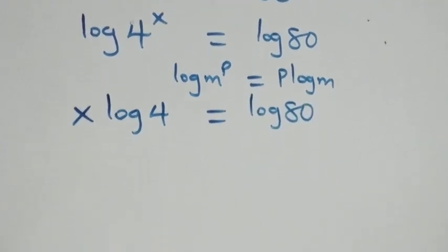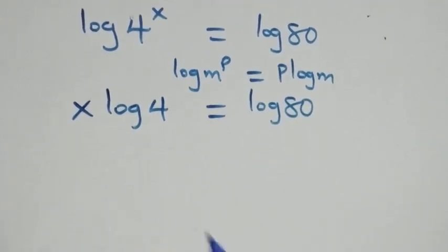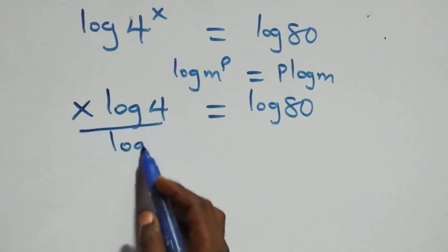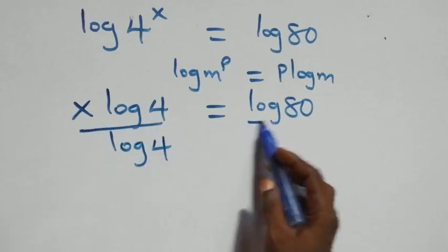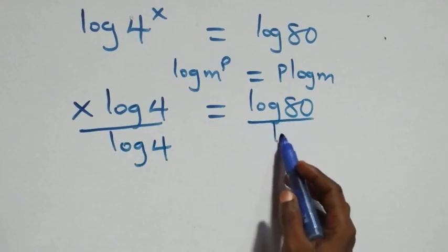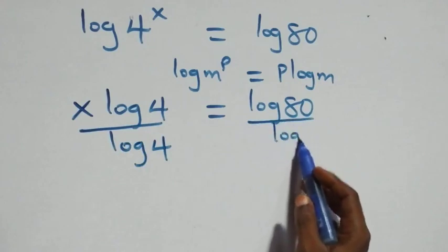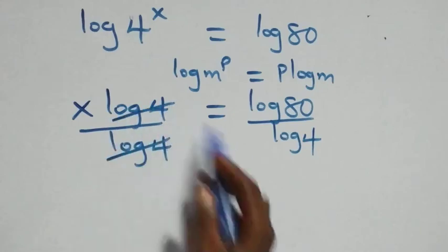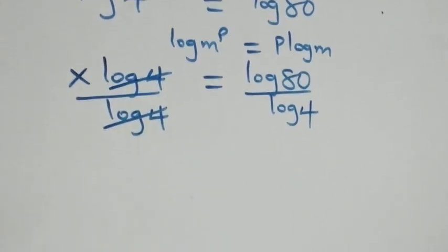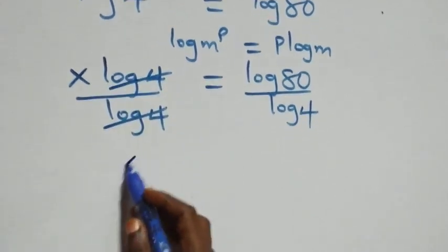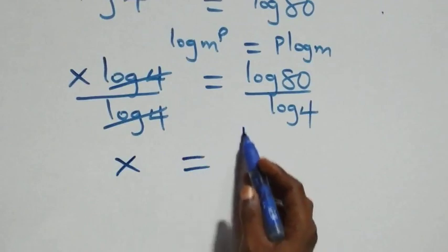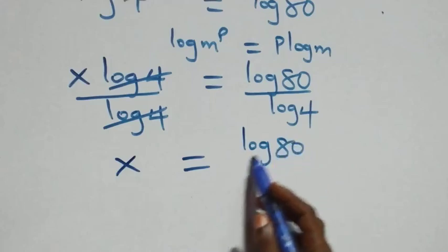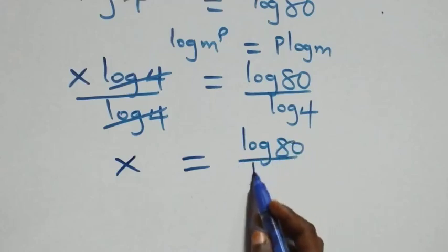The next step is to divide both sides by log four. Log four cancels on the left side, and we are left with x equals log eighty over log four.